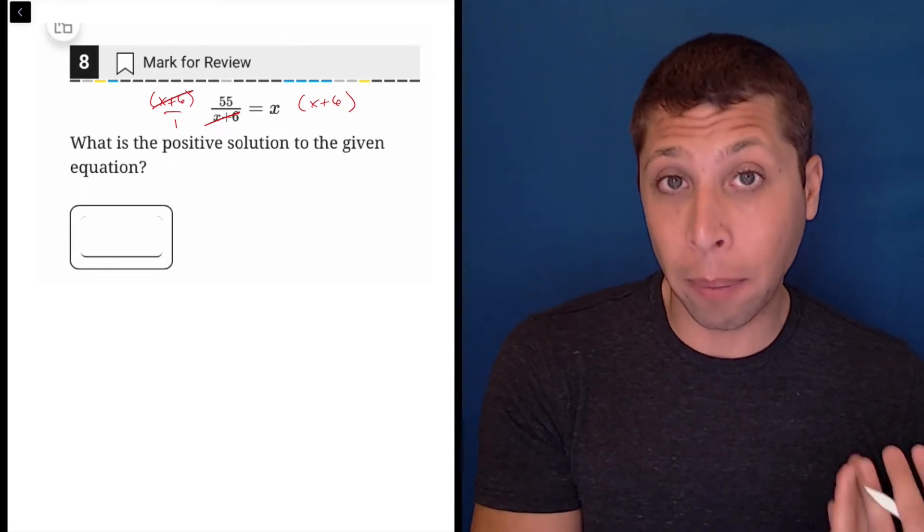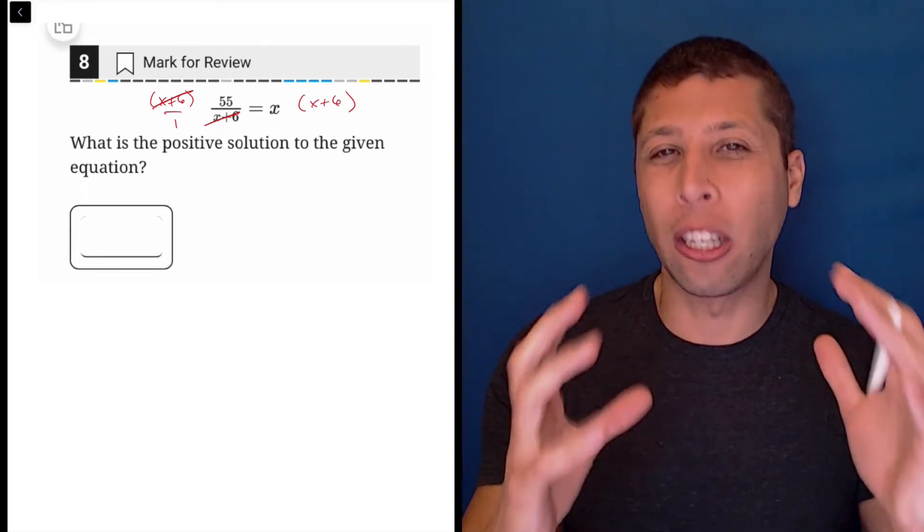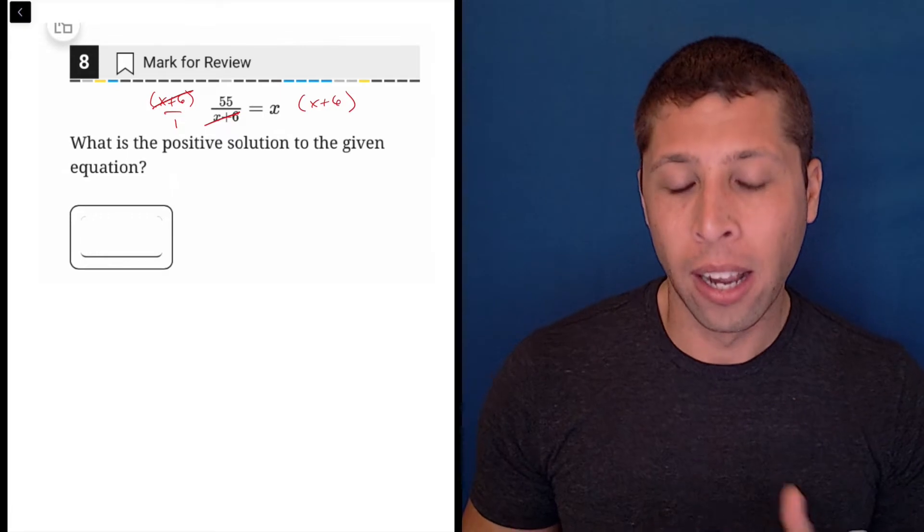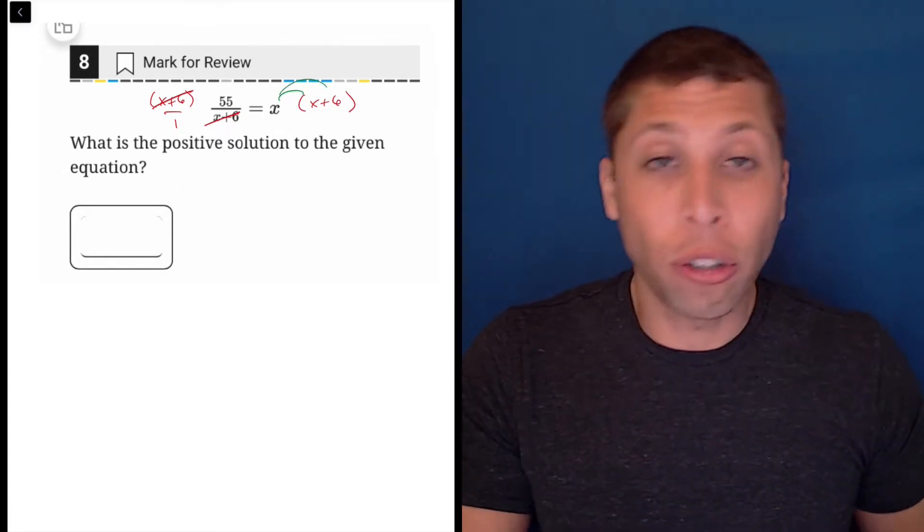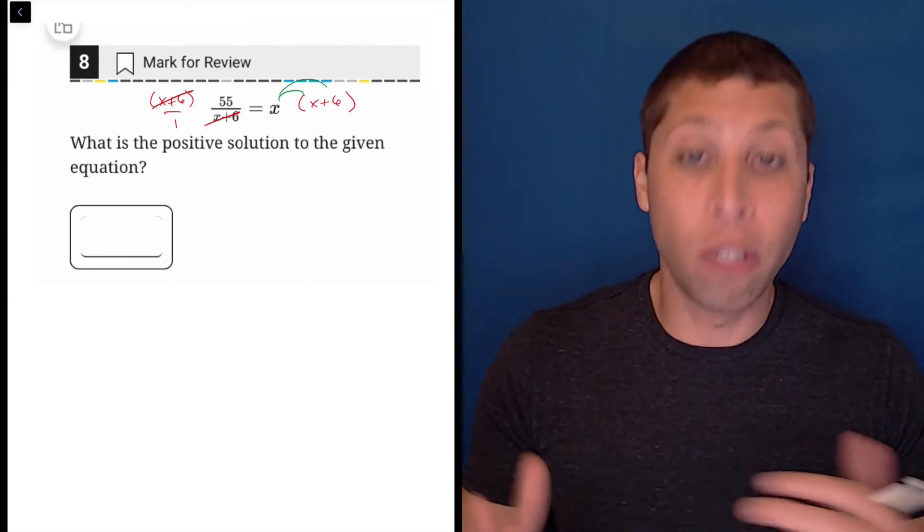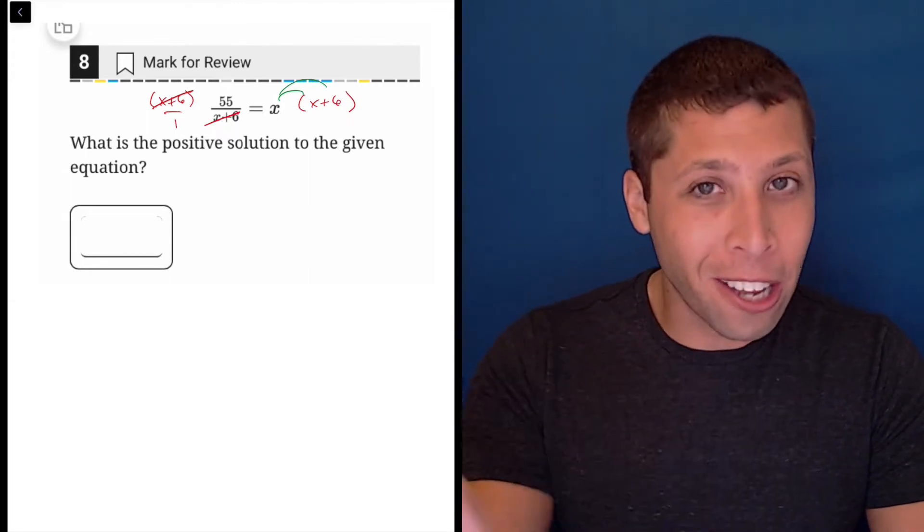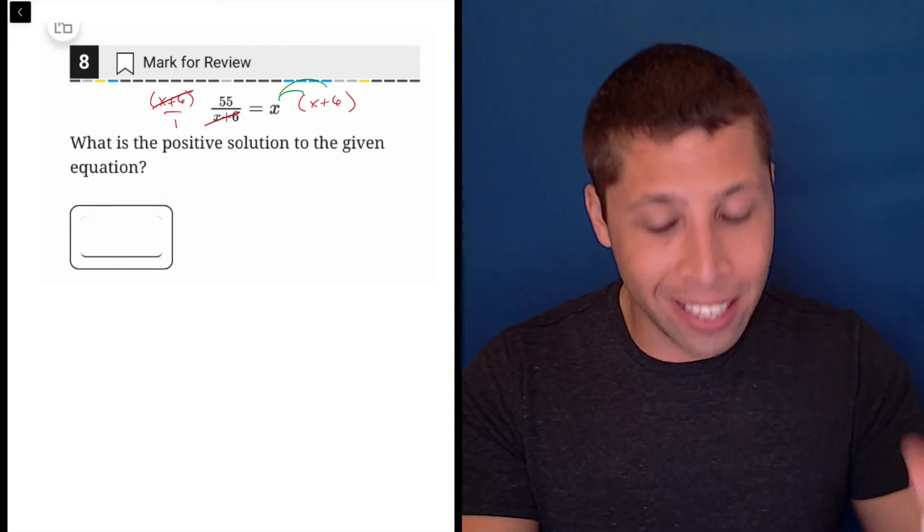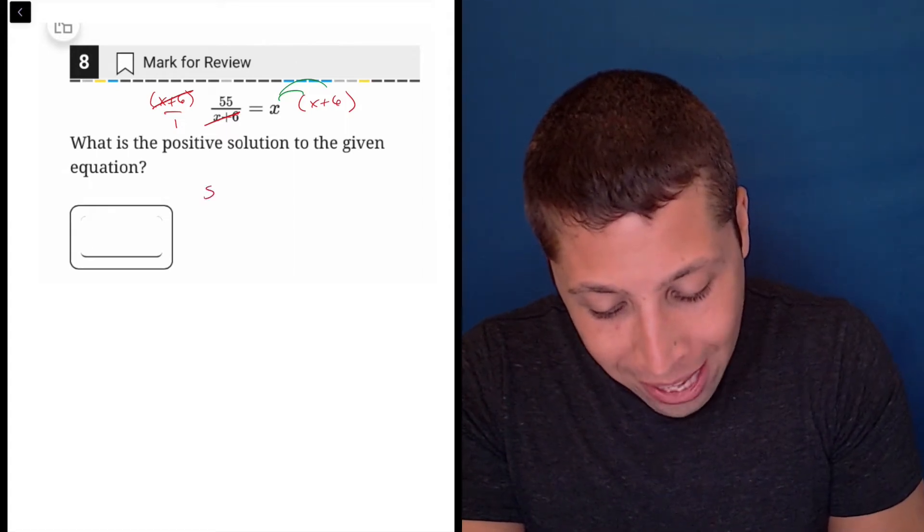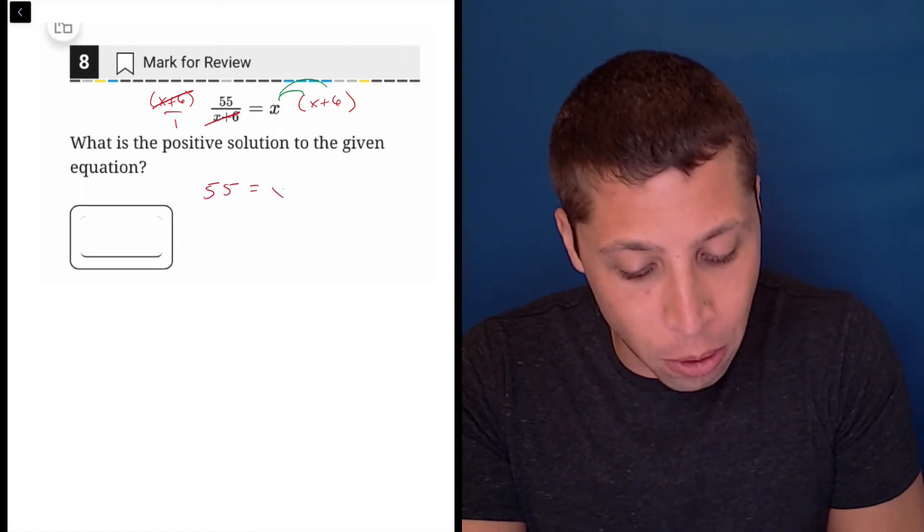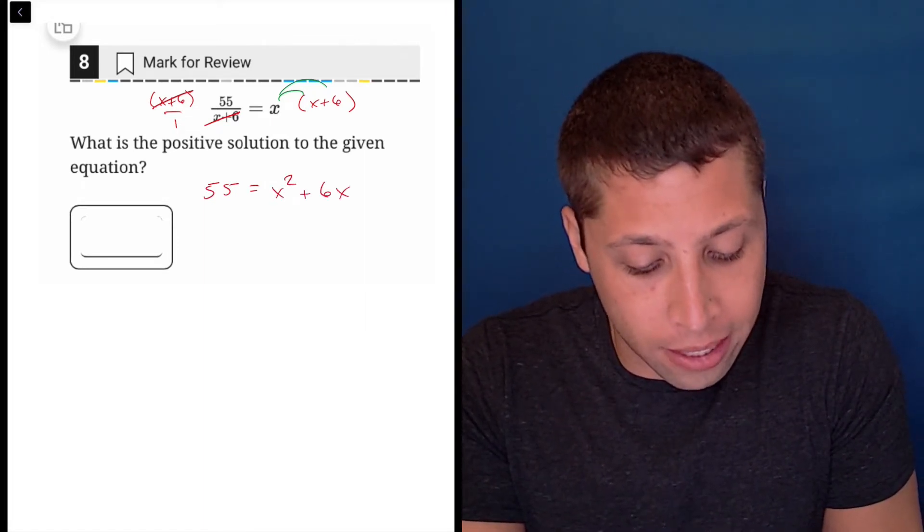But when we do it on the right, we got to be careful because x plus six is like a unit. That's why I put those parentheses there. So when we deal with it, we have to distribute and make sure that x that we're multiplying goes to both parts. So if I already lost you, just stay with me a little bit. You're going to get to the easier explanation at the end, but you should really know this. So what we end up with is 55 is equal to, if I distribute, x squared plus six x.